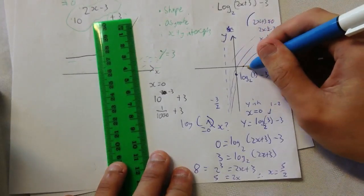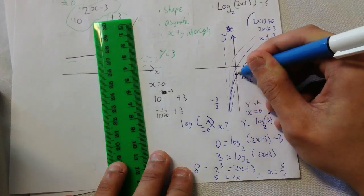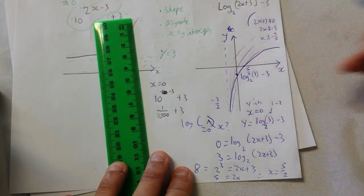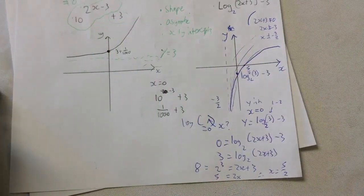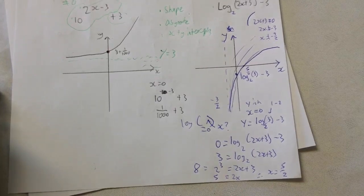And this is 5 on 2. So, we know our graph is going to look like this. So, that should help. The next video will be showing you how to get an equation from a graph. Okay. Cool.